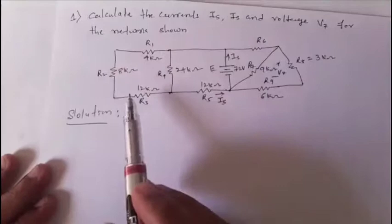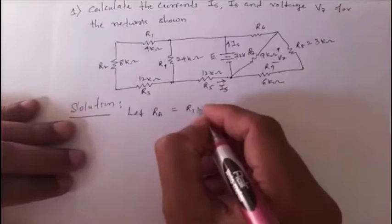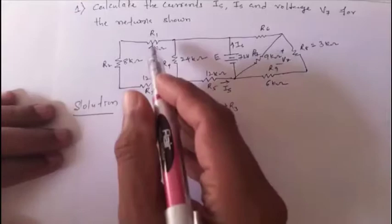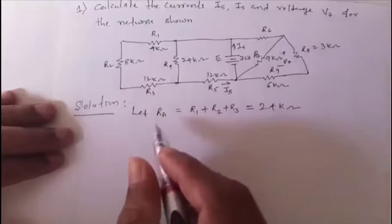Let ra be the series combination of r1 + r2 + r3. Since all three are in series, ra = r1 + r2 + r3 = 4 + 8 + 12 = 24 kΩ.